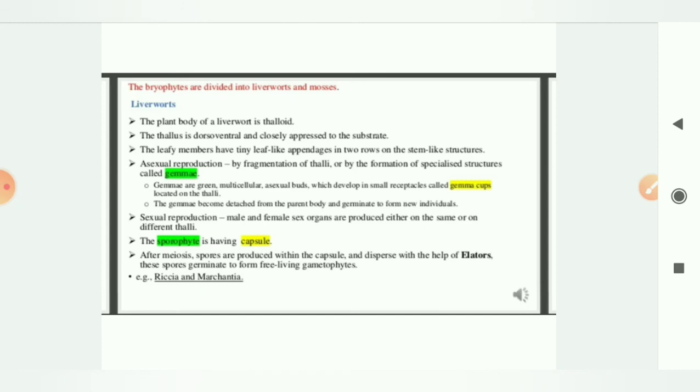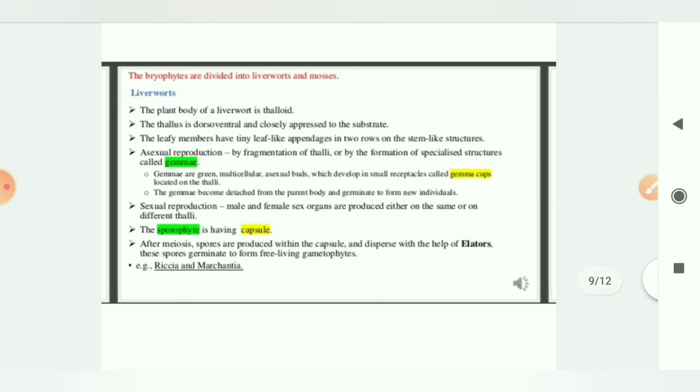They will fall anywhere, and wherever they will get the suitable condition, they will germinate to form a gametophyte, free living gametophyte. In case of pollination, we know that there is the transfer of pollen grain from anther to stigma, but here it is not from anther to stigma. Here it is from capsule, and with the help of elaters it will move here and there, and wherever they will get the suitable condition, there it will grow to form a gametophyte.